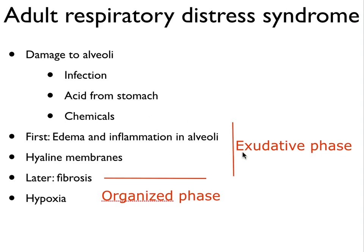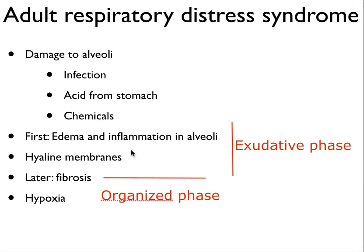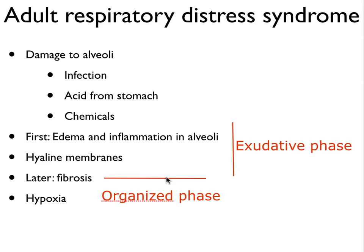The first phase is called the exudative phase, when there's inflammation and edema in the alveoli and the appearance of hyaline membranes — the immune system moves into the lung and fluids from the blood enter the lung. Then comes the organizing phase, when the debris is cleared and the damage is repaired with scar tissue and fibrosis. Usually the scar tissue is removed at some point and you get a properly functioning alveolus again. But sometimes this fibrosis continues and worsens, and then you develop pulmonary fibrosis with hypoxia as a result, because gas exchange is impaired.